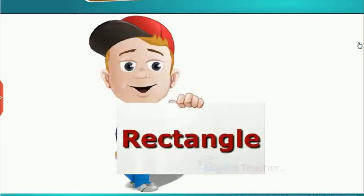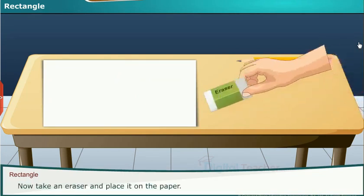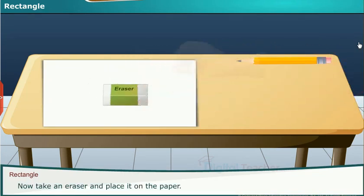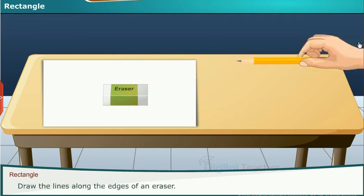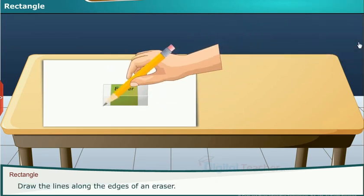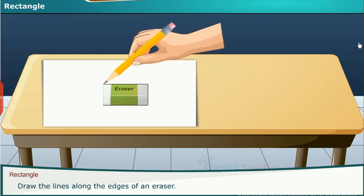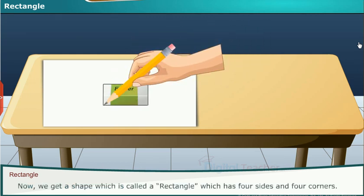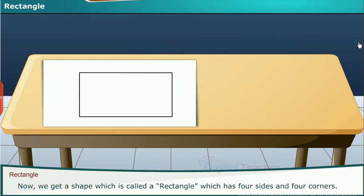Now let us know the shape of a rectangle. Take a paper and put it on a table. Now take an eraser and place it on the paper. Take a pencil or marker. Draw the lines along the edges of an eraser. Now we get a shape which is called a rectangle, which has four sides and four corners.